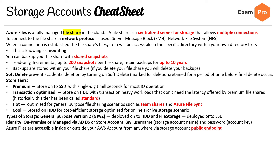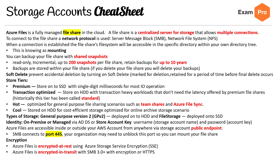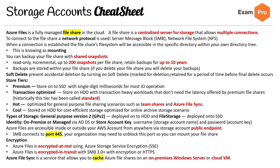Azure Files are accessible inside or outside your Azure account from anywhere via a public endpoint. SMB connects on port 445 — remember that, as your organization may need to unblock this port to mount your file share. For encryption, we have encryption at rest using Azure Storage Service Encryption (SSE), and encryption in transit using SMB 3.0 with encryption or HTTPS. Azure File Sync is a service that allows you to cache Azure file shares on your on-premises Windows Server or cloud VM. Detailed exam questions on Azure File Sync are rare — mainly you need to know how to set it up rather than use-case concepts.